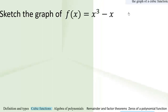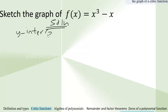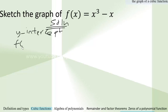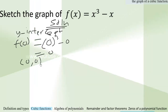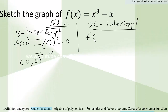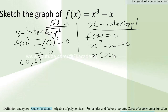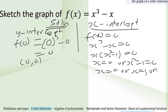Now let's take another example. We are going to sketch the graph of f of x equals x cubed minus x. We find the y-intercept by setting x equals 0: f of 0 equals 0 cubed minus 0, which gives 0. So the y-intercept is (0, 0). For the x-intercept, f of x equals 0 means x cubed minus x equals 0. Factoring out x gives x times (x squared minus 1) equals 0, so x equals 0, x equals 1, or x equals negative 1.